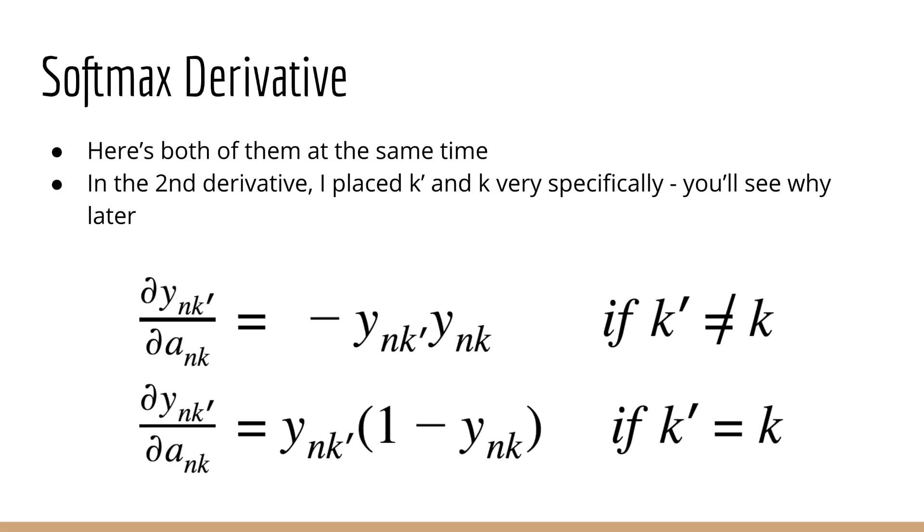Alright, so now we've found these two expressions for the derivative of the softmax. Since we have to plug this back into our loss derivative, it would be nice if we could combine these into one expression. Now you'll see that I've expressed the second derivative in a very particular way. In particular, I've put y of nk prime for the first instance of y, but I've used y of nk for the second instance of y. Of course, technically they both yield the same result because k prime is equal to k. However, this form is convenient for the rest of our derivation.